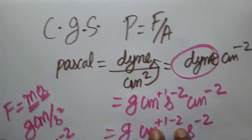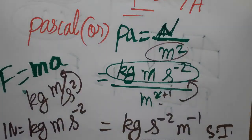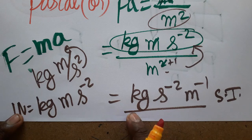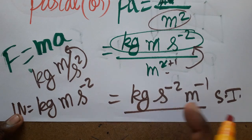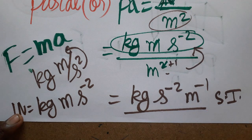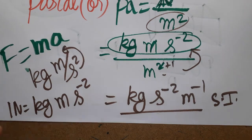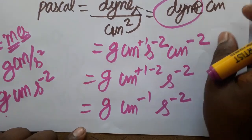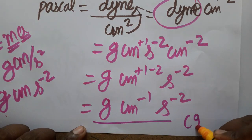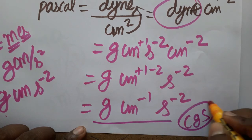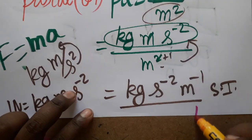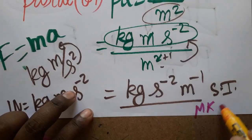In the CGS system, mass is represented in grams, time in seconds, and length in centimeters. This gives the same derived unit we just calculated — g·cm⁻¹·s⁻² — as the CGS unit of pressure, compared to kg·m⁻¹·s⁻² in the MKS system.